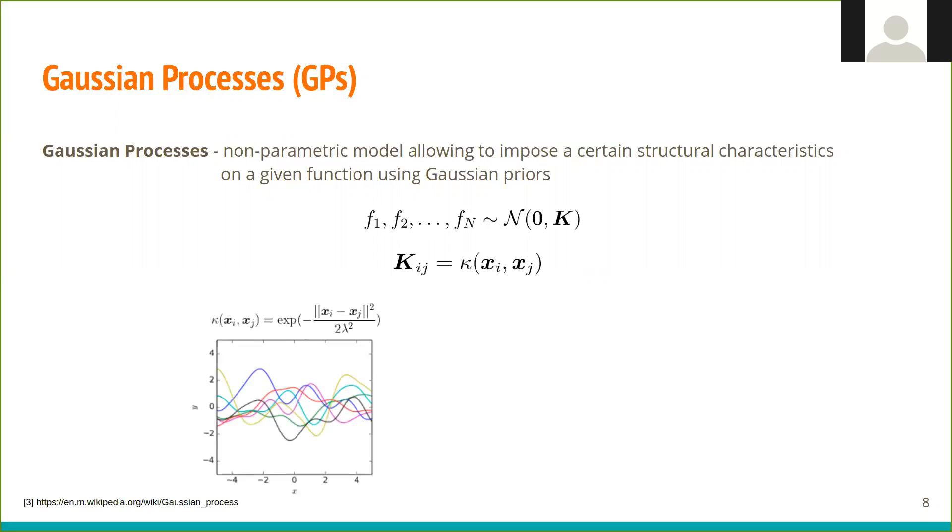Here, we can see the function samples for the most common RBF kernel. We can control the smoothness of these functions using lambda hyperparameter. The lower the lambda, the quicker the function will change.